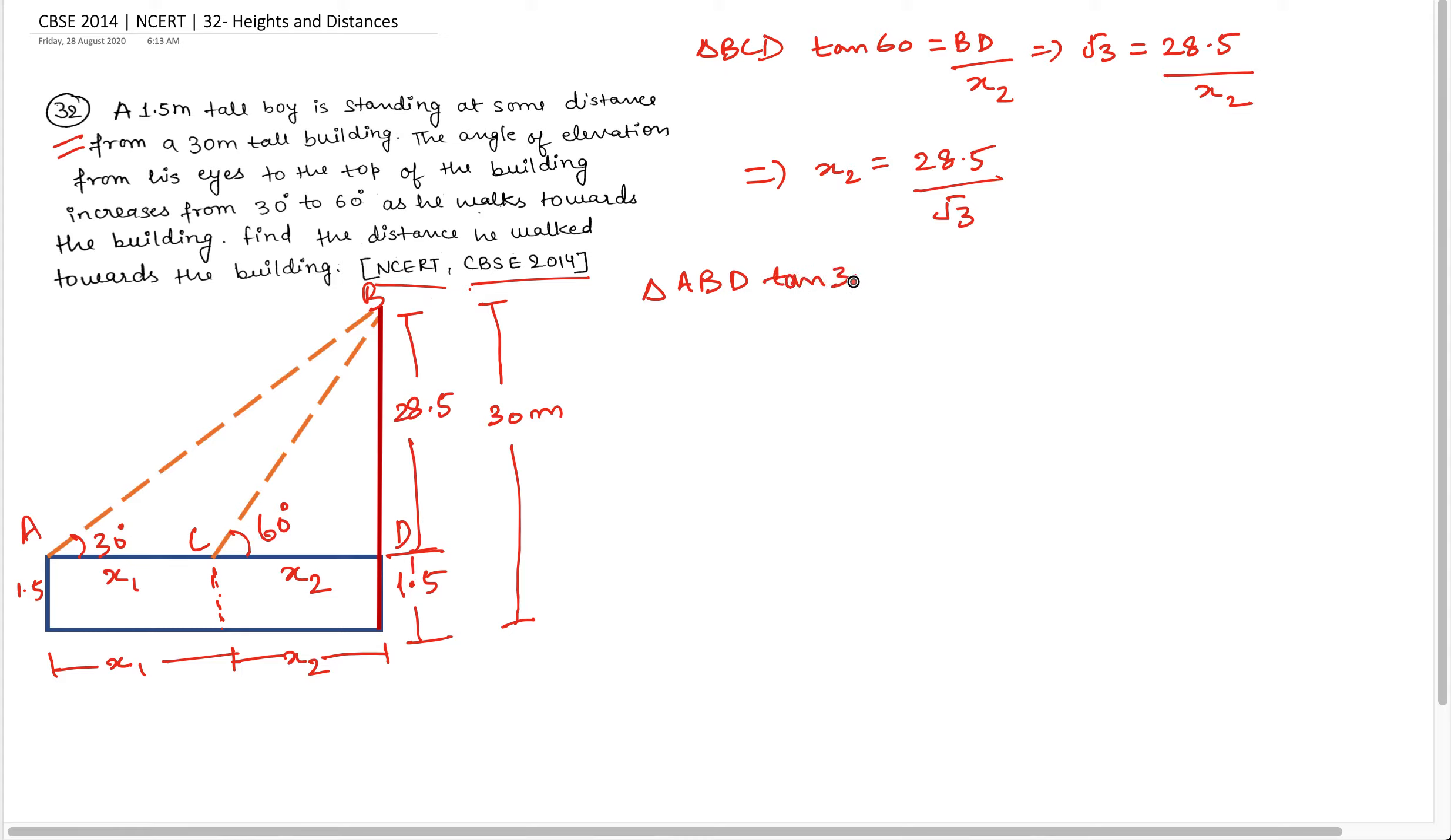What is this? Tan 30 is equal to BD upon AD. BD upon AD. Tan 30 is equal to BD, 28.5 upon AD, x1 plus x2.